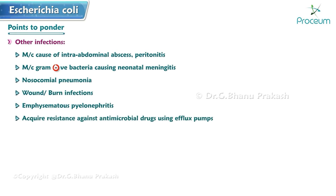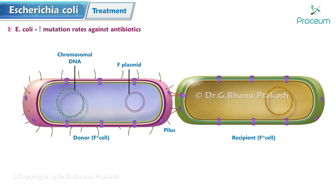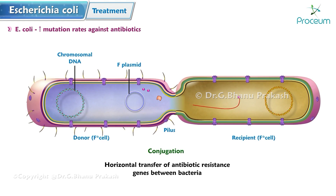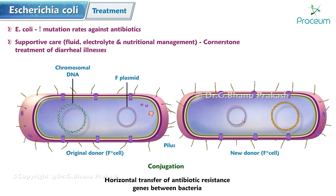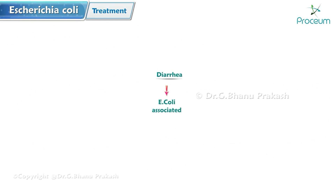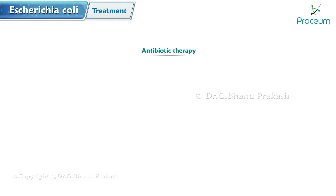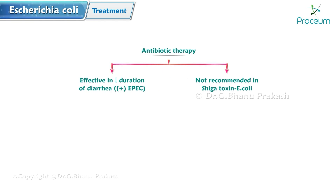E. coli is known to acquire resistance against antimicrobial drugs using efflux pumps. E. coli has high mutation rates against antibiotics, and conjugation is the major mechanism for horizontal transfer of antibiotic resistance genes. Supportive care with fluid, electrolyte, and nutritional management is the cornerstone of treatment for diarrheal illnesses. Diarrhea associated with E. coli often resolves spontaneously; for patients with a pathogenic E. coli identified on stool testing, antibiotic therapy is generally not recommended. Antibiotic therapy is specifically not recommended for STEC infection due to the association with hemolytic uremic syndrome.